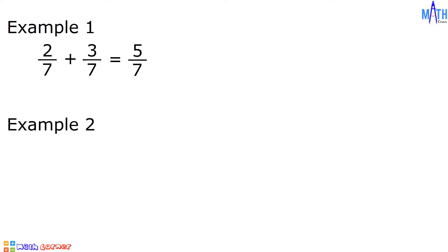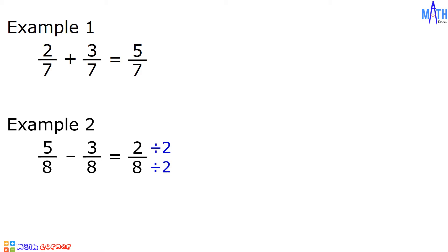Example number 2: 5 over 8 minus 3 over 8. In subtracting similar fractions, we will subtract the numerators and copy the common denominator. 5 minus 3 is equal to 2 over 8. Let us express 2 over 8 in lowest term. Let us divide the numerator and the denominator by 2, since 2 is the greatest common factor. 2 divided by 2 is equal to 1, over 8 divided by 2 is equal to 4. The answer is 1 over 4.